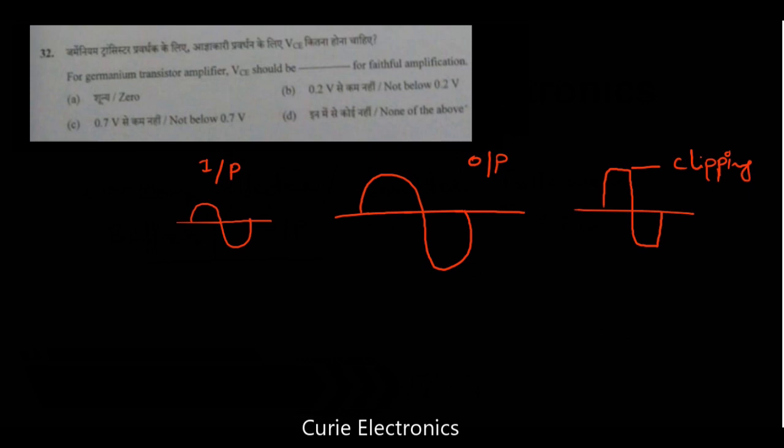Now VCE should be greater than 0.2 volt to get faithful amplification. If it is less than 0.2 volt that means the transistor is in saturation. So for a germanium transistor amplifier VCE should be greater than 0.2 volt that means not below 0.2 volt. So the answer is option B is the right answer. Not below 0.2 volt.